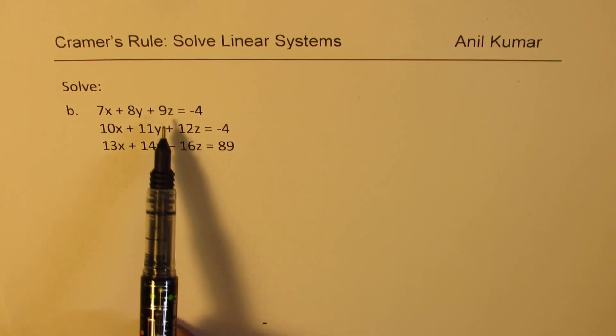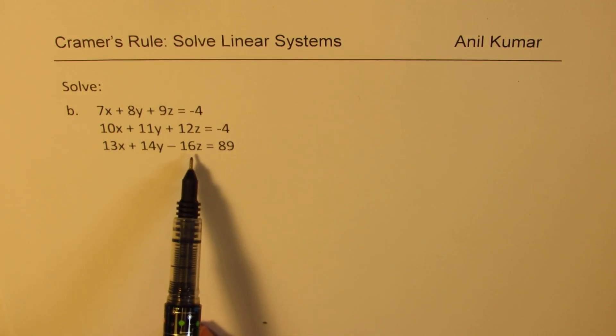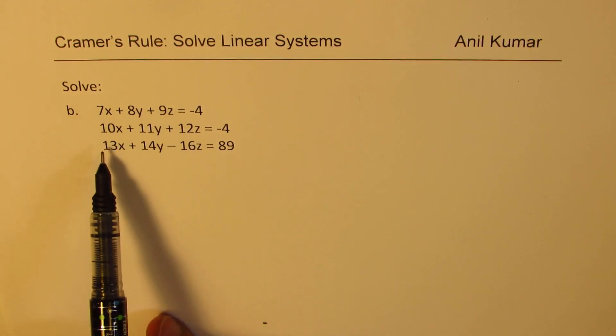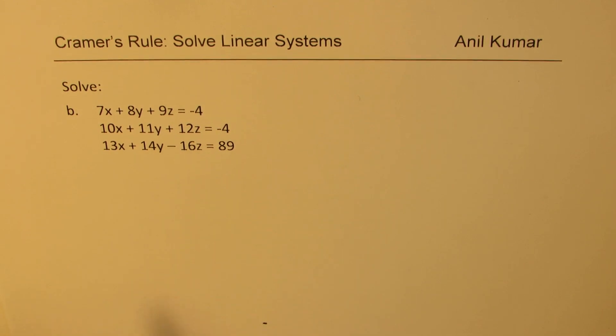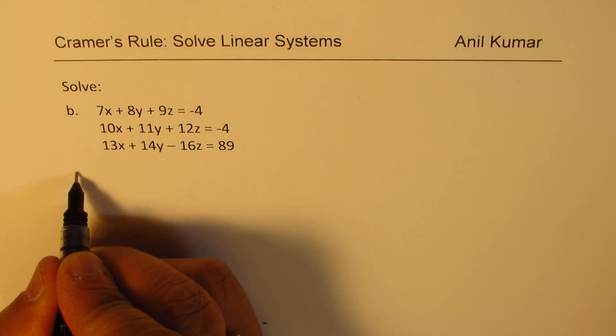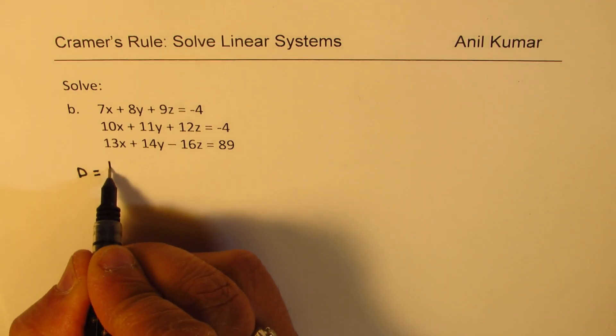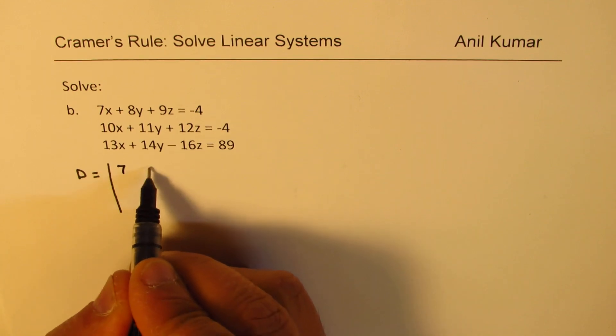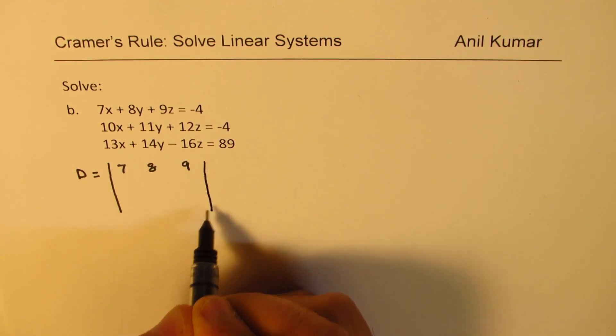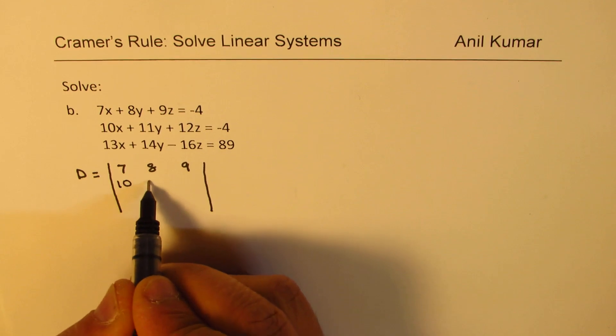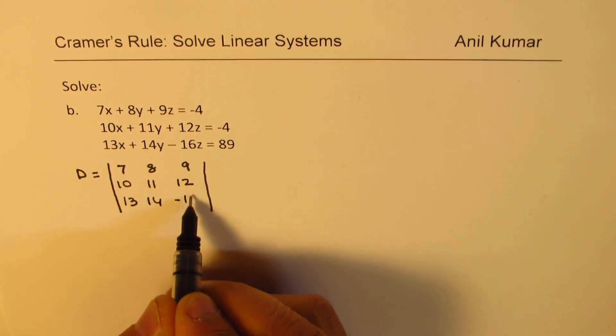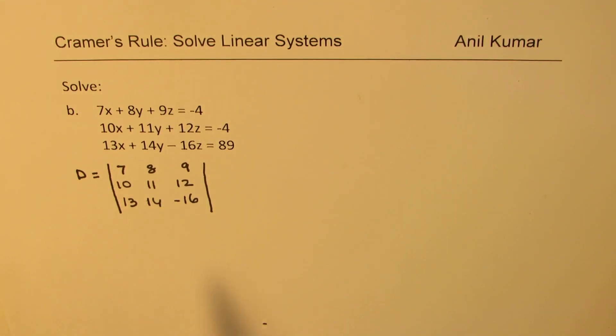So, the very first step is to write the coefficient matrix. We will actually replace that with the determinant to get the value. So, what we do is we write the determinant to find the value. So, the determinant representing the coefficient matrix is 7, 8, 9, 10, 11, 12, 13, 14 and -16. So, that is the determinant D which will go into the denominator.